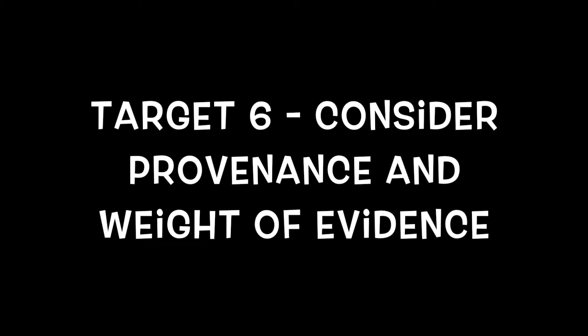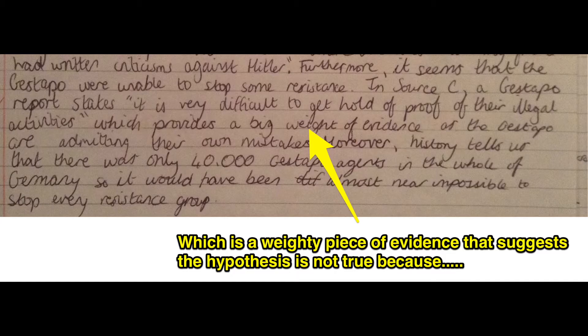Target 6: we're slowly but surely taking steps in the right direction with regards to provenance, but it's still not quite there. You've got to not take everything at face value. The examiner is looking to see that you have a good idea of what sources are, how you can use them, and which are more likely to be more valuable than others. Here is an example of somebody who has considered the weight of evidence — they've identified one reason why, for the given inquiry, this source is a weighty piece of evidence.